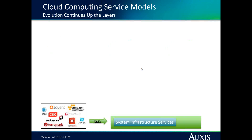Within private, public, or hybrid clouds, you can do different things. The first is what's called Infrastructure as a Service, or IaaS — you're moving your computing, servers, networking, storage, and memory to these providers. The leaders today in the IaaS space include Amazon Web Services, Rackspace, Terramark, Verizon, CSC, and Microsoft Azure. The largest by far, and the most advanced, is Amazon Web Services.